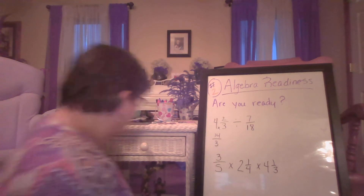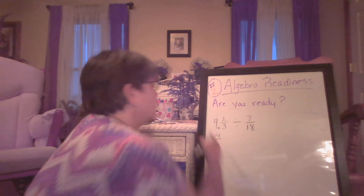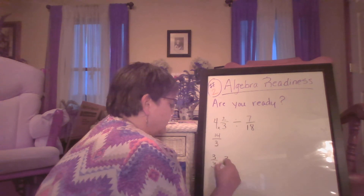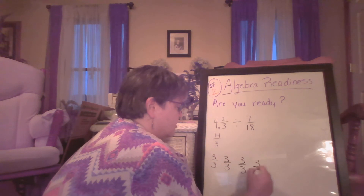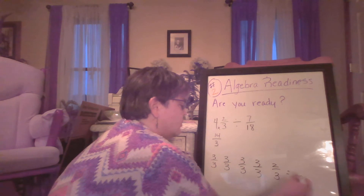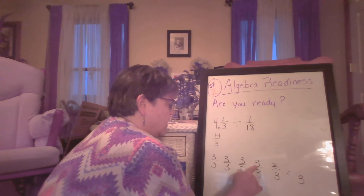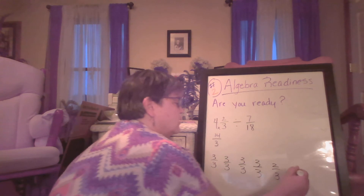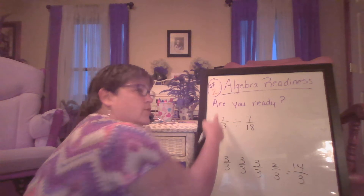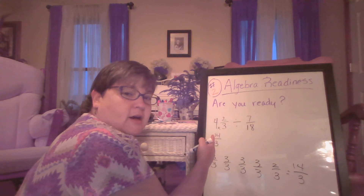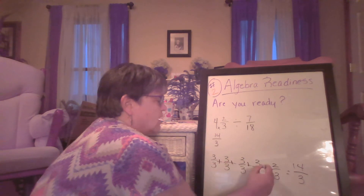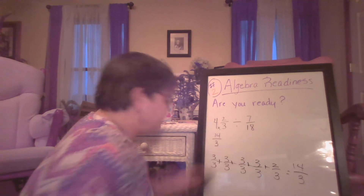I could have done this another way. I could have said four wholes, which would have been three-thirds, and three-thirds, three-thirds, and three-thirds — that would have been four — and then the two-thirds. I could have kept my thirds and said three plus three plus three plus three is 12, 13, 14. That's another way to find out what four and two-thirds would be as an improper fraction: I take my four wholes and then my fraction.